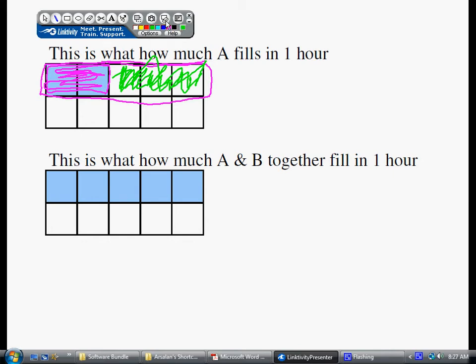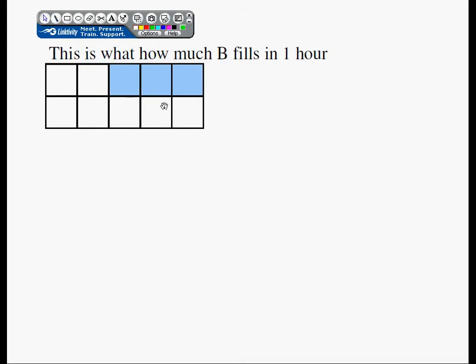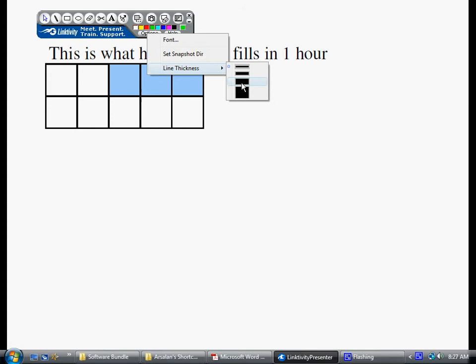So, from the previous slide, we drew this conclusion that machine B does three squares in one hour.